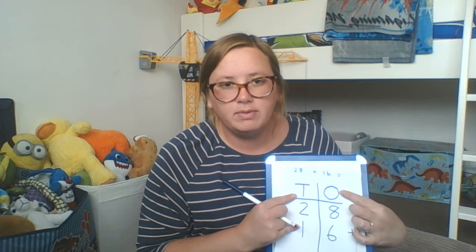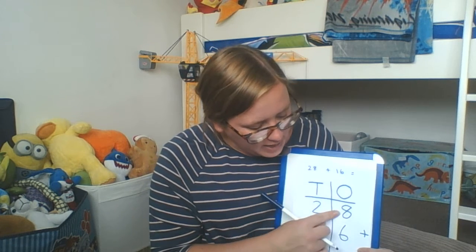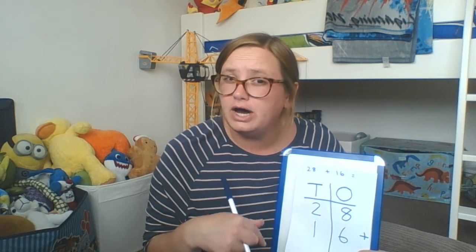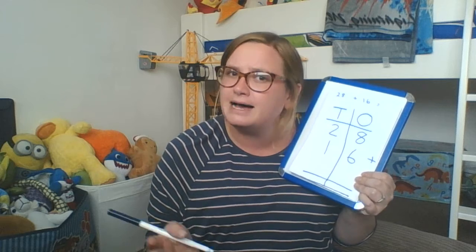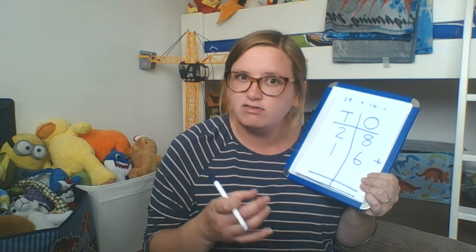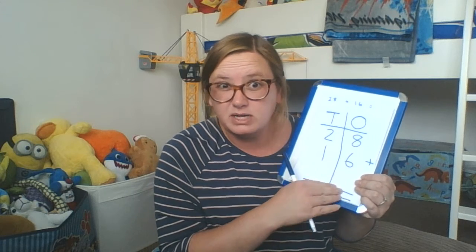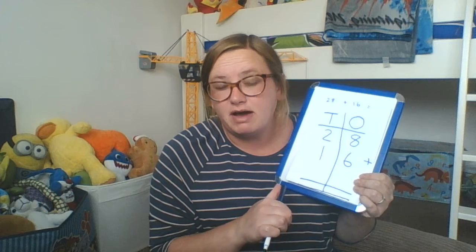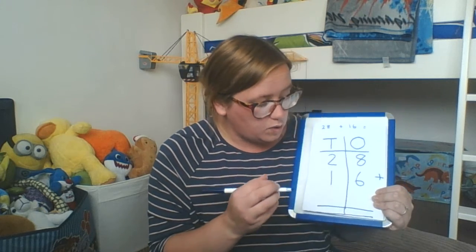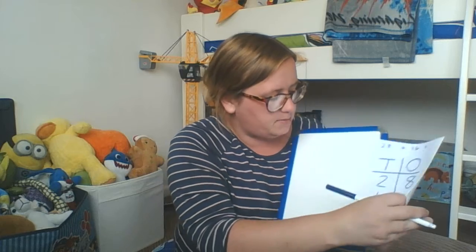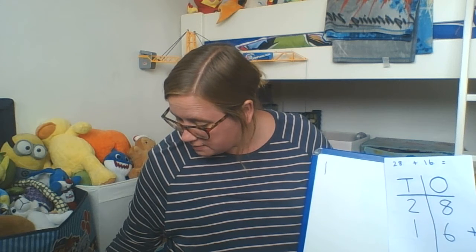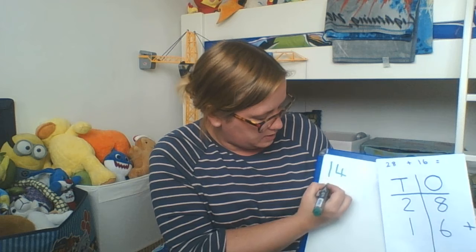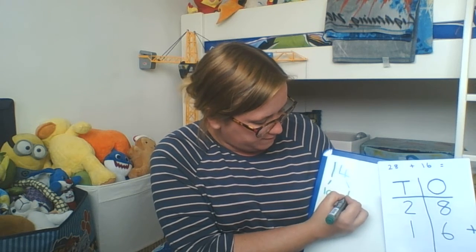Looking at my ones column — the one furthest to the right — I've got 8 add 6. I know, and many of you will know, that 8 add 6 is 14. I wouldn't write 14 in here because 14 has a 10 in it — it's 1 ten and 4 ones. So what we do: we've got 14, that's 1 ten and 4 ones. I'm going to take the 4 ones and put that in my ones column, because there are 4 ones.